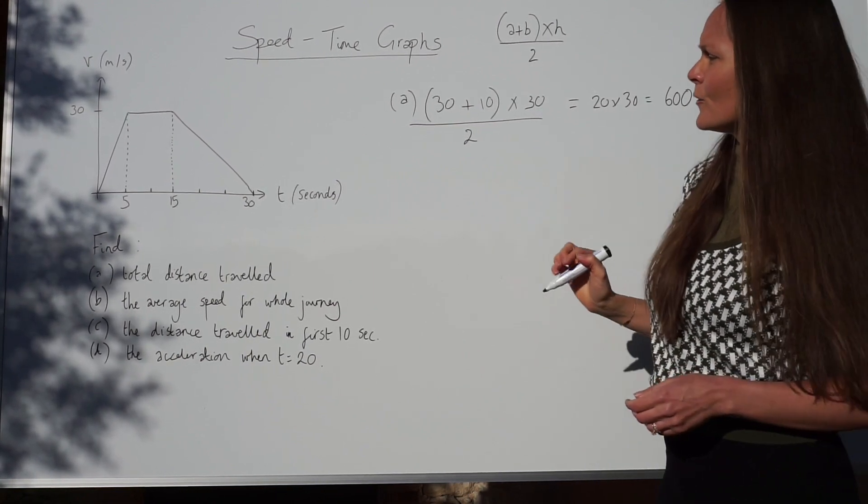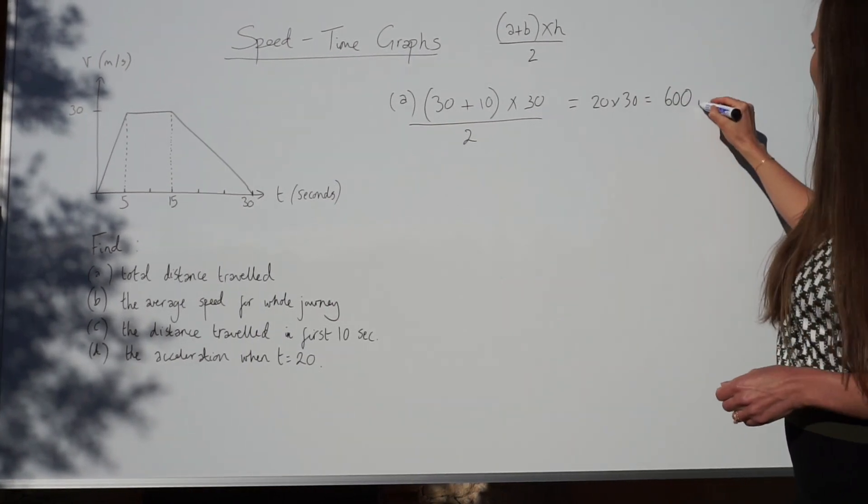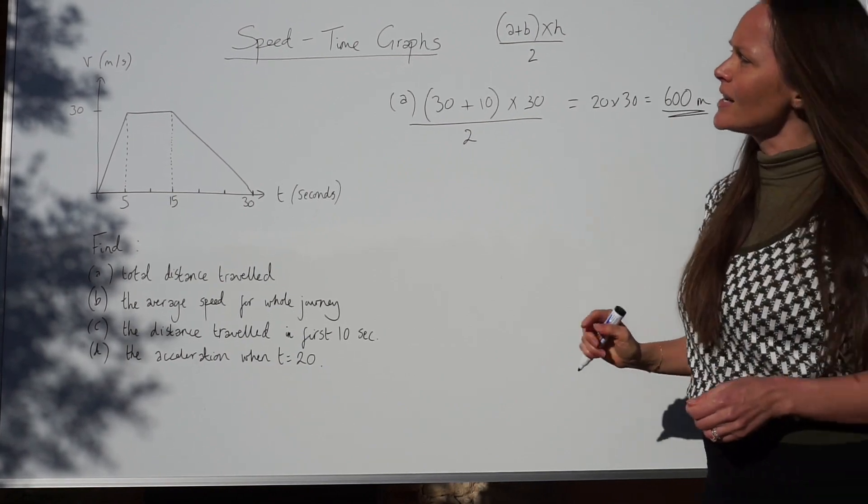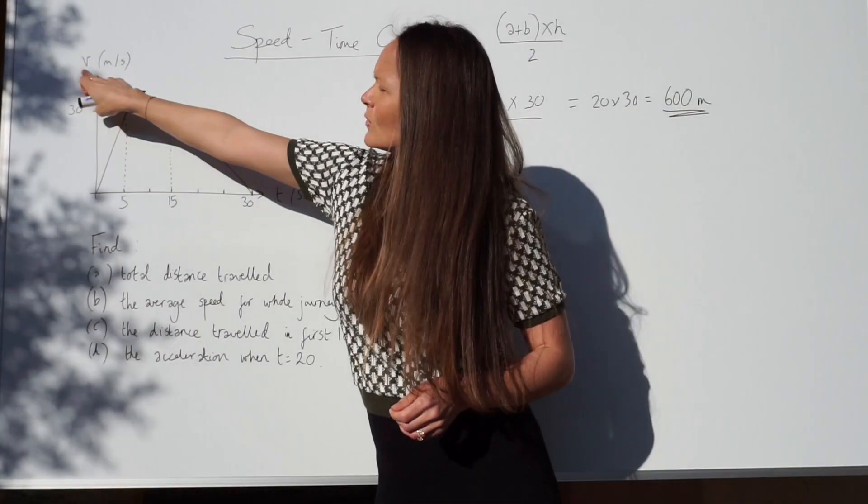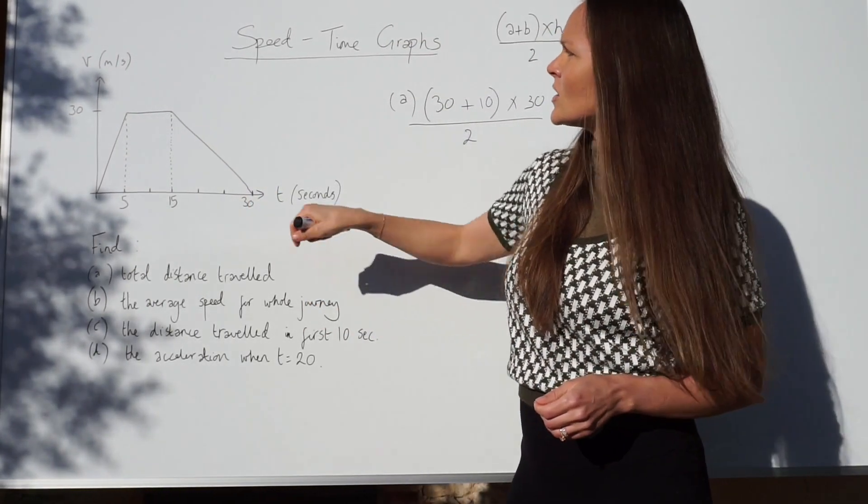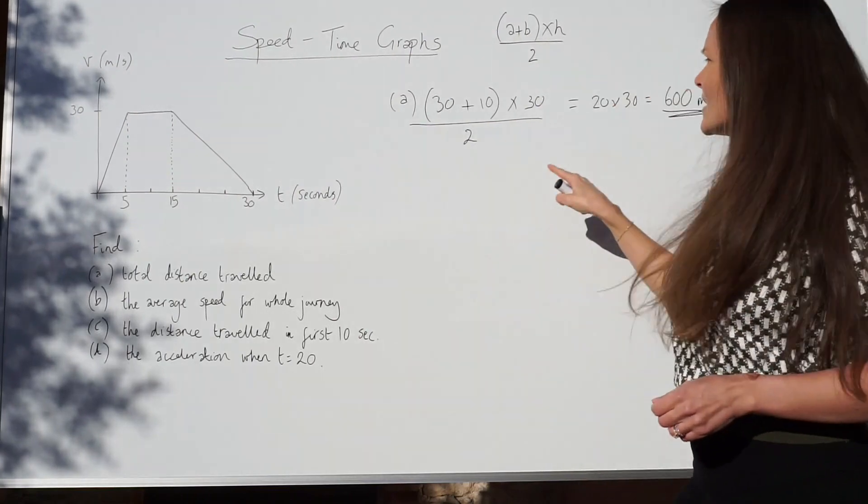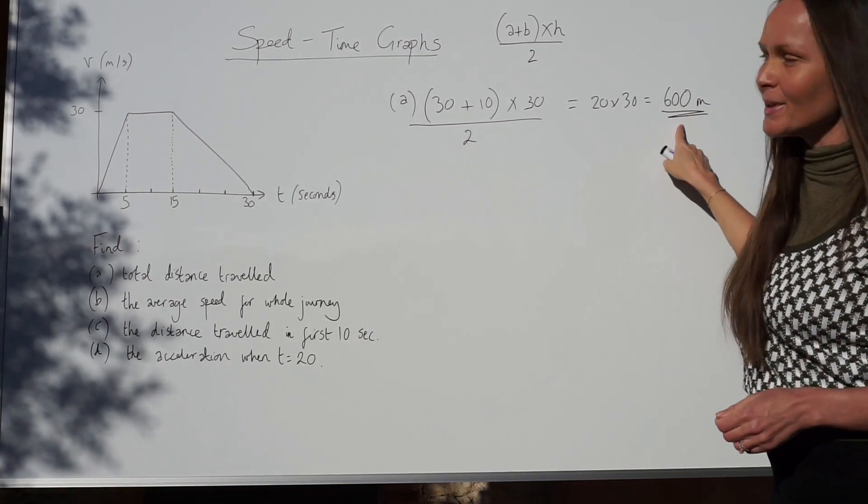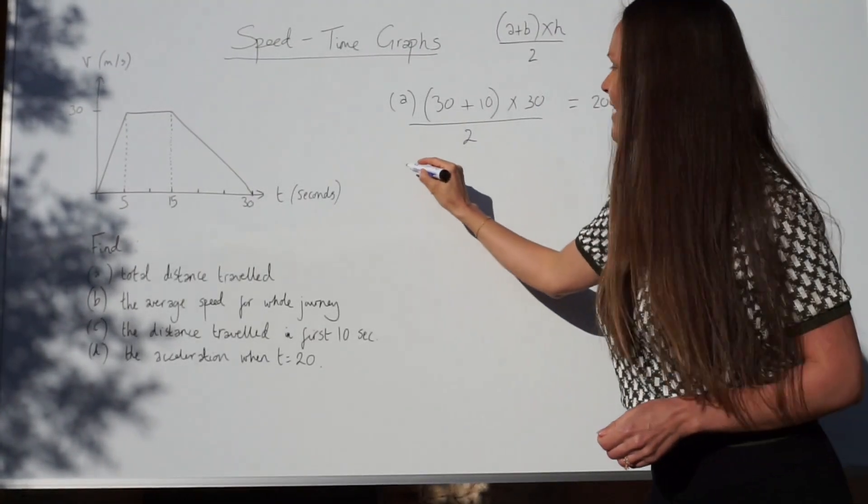So, the units for this distance are metres. Because here we know that the velocity, or the speed, is in metres per second. Here the time is in seconds. But because it's metres per second, it means the distance here is 600 metres. On to the next part.